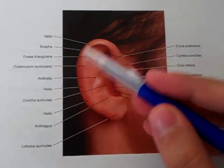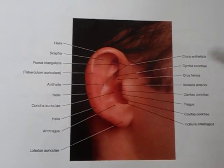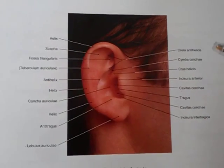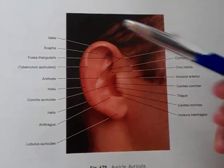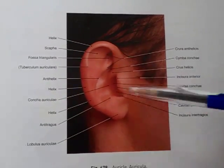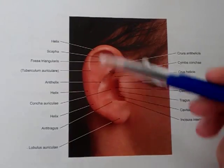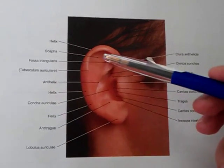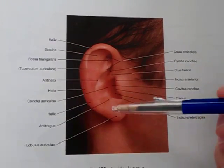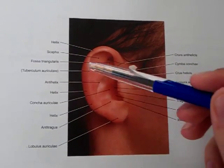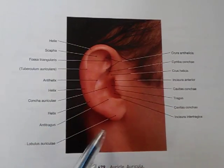The auricle is a folded cartilaginous plate covered with elastic cartilage, covered by skin. The skin is more tightly attached on the lateral surface than the medial surface.